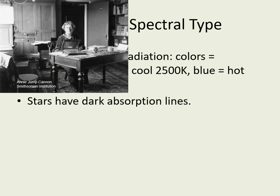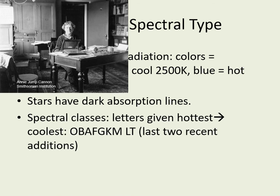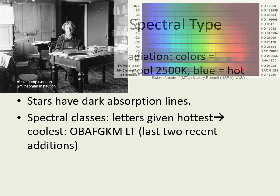In the early 20th century, Annie Jump Cannon noticed similarities between certain spectral types, suggesting it was better to rearrange the letters into the modern sequence of spectral classifications: O, B, A, F, G, K, and M, with L and T classes added recently. This order of classifications corresponds to the colors of stars, so the coolest stars are class M, while the hottest are class O.